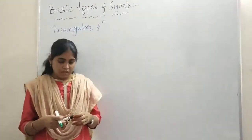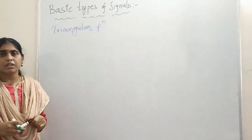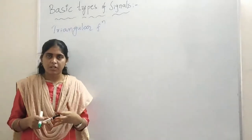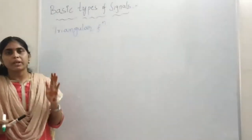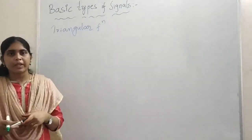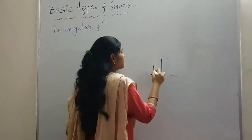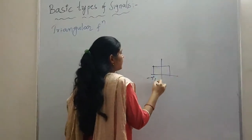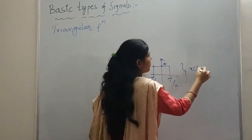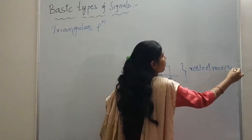We were discussing basic types of standard signals. We have seen up to the gate pulse or rectangular pulse signal — rect of T by tau — which has a mathematical representation as well as a graphical representation. From minus tau by 2 to plus tau by 2, the amplitude is A, and its mathematical representation is A rect of T by tau.